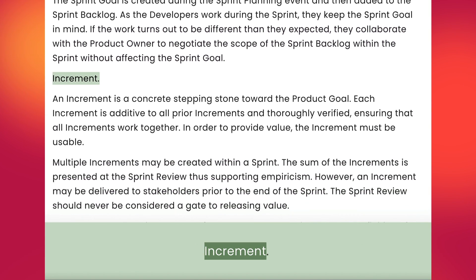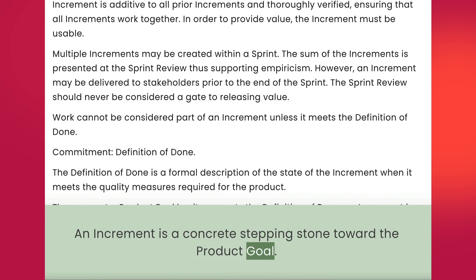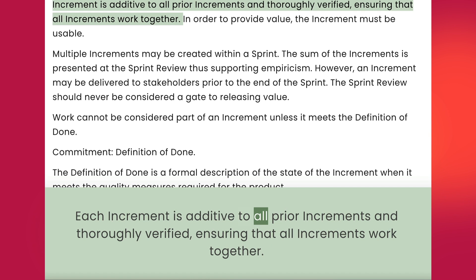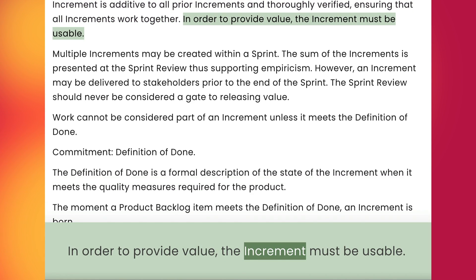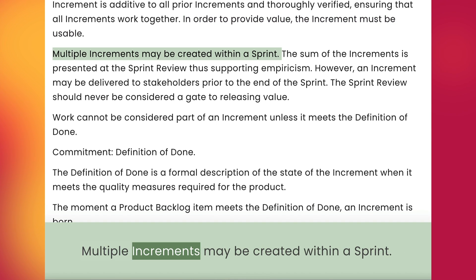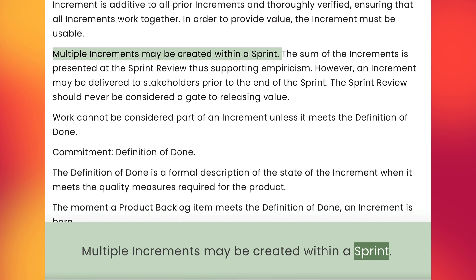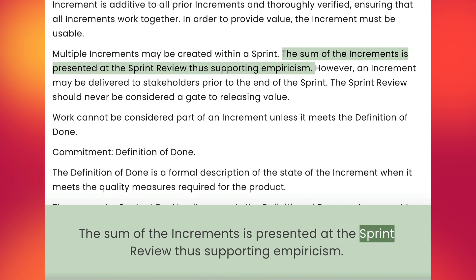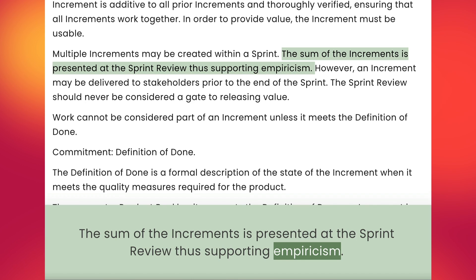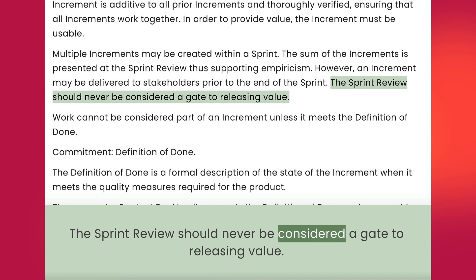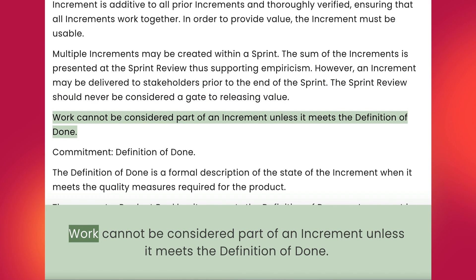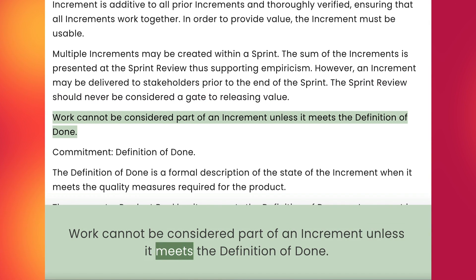Increment. An increment is a concrete stepping stone toward the product goal. Each increment is additive to all prior increments and thoroughly verified, ensuring that all increments work together. In order to provide value, the increment must be usable. Multiple increments may be created within a sprint. The sum of the increments is presented at the sprint review, thus supporting empiricism. However, an increment may be delivered to stakeholders prior to the end of the sprint. The sprint review should never be considered a gate to releasing value. Work cannot be considered part of an increment unless it meets the definition of done.